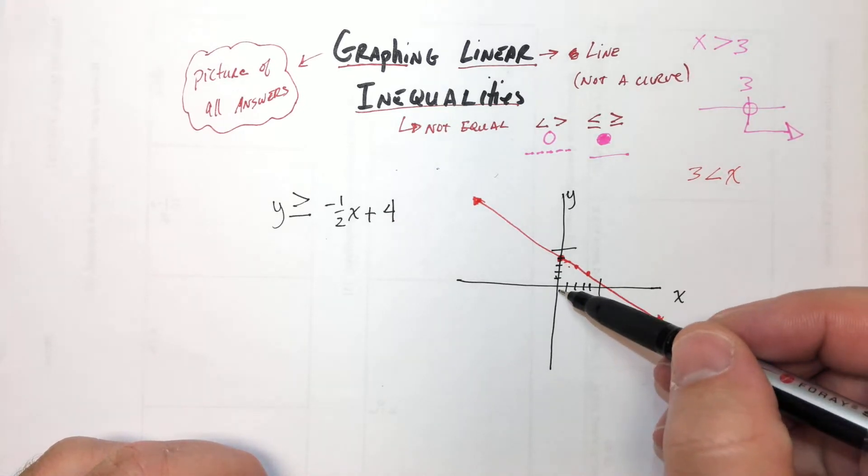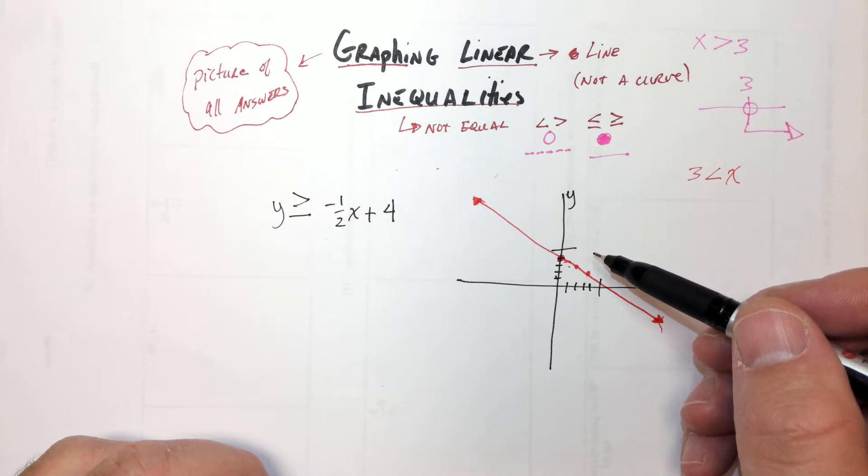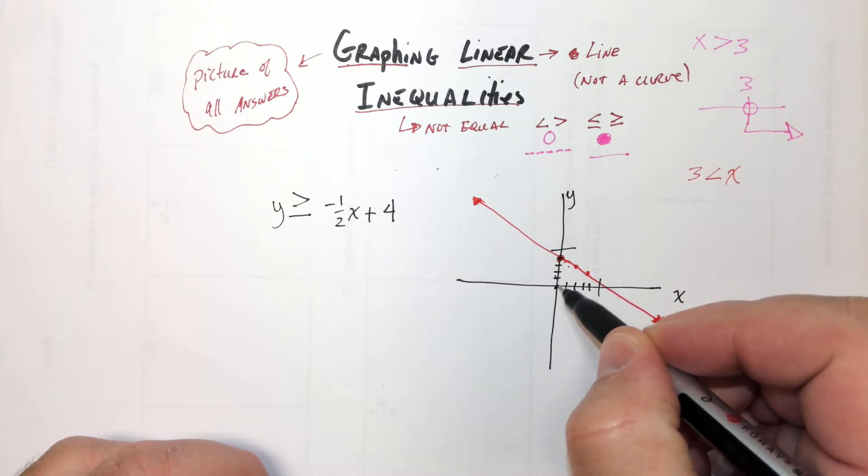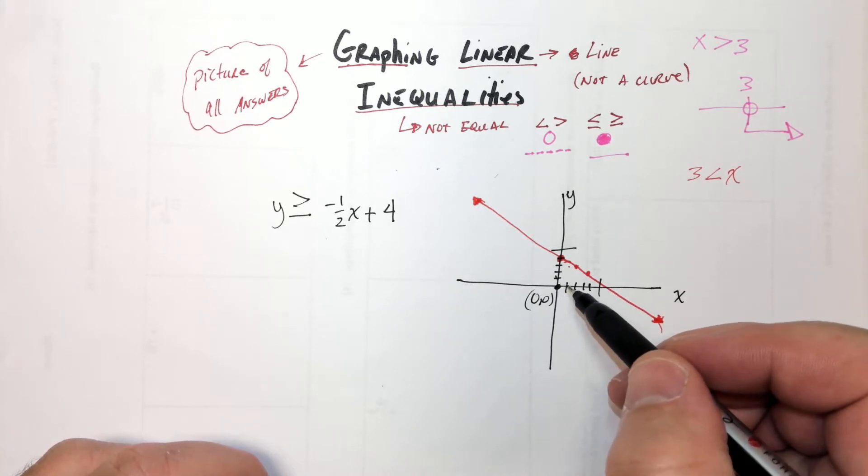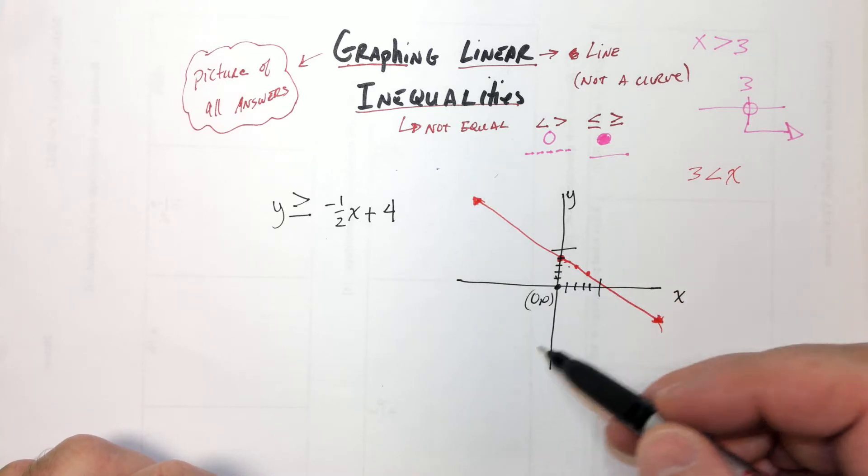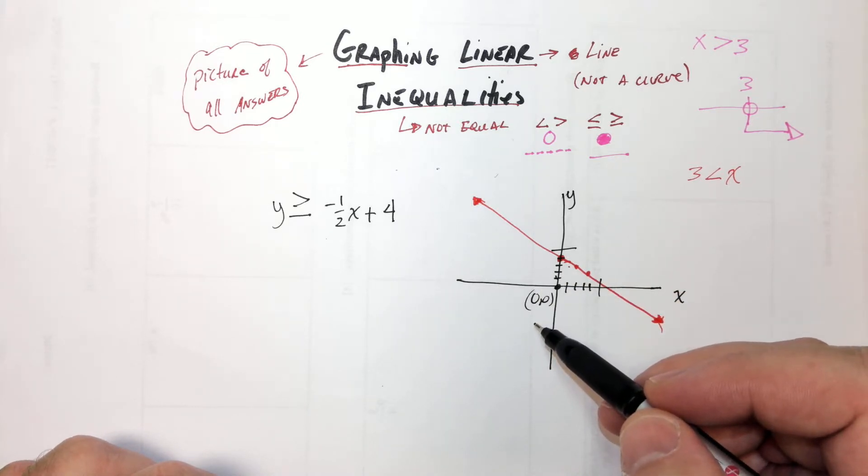So it might be above because it's greater, but it might be less. It really depends on the situation. And it depends on how the equation is written. So what I do, I just pick a point. So pick a point either underneath the line or above the line and check it. Always choose zero, zero. If you can, zero, zero is the best because the math is really easy, right? So let's see if that's an answer. Now, Alexa, if it is an answer, that means all of the things down here are answers. And I'm going to shade everything underneath.